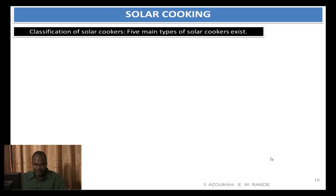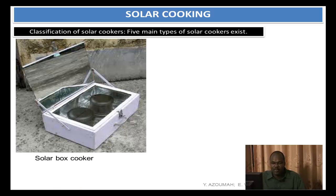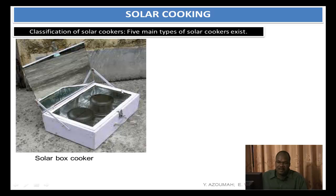When it comes to solar cookers, you have the heat and you use it to cook your food. The heat could be gas, electricity, or here it is solar energy. You have many configurations. For instance, this is a solar box cooker — it works like a flat plate collector. You have the glass covering the box, and inside you put whatever you want to cook. It heats up inside — that's all. Anyone can have one in their house; it's very simple.